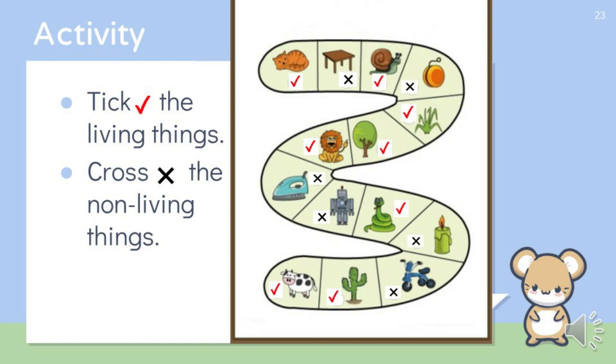Then we have a picture of a tricycle. Is it a living thing? No, tricycle is a non-living thing. Then there is a picture of a candle. It is a non-living thing. Then we have a picture of a snake. Yes, you are right. Snake is a living thing, so we are going to tick it.